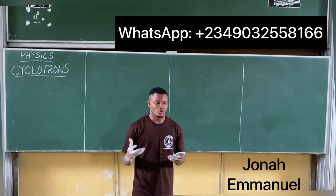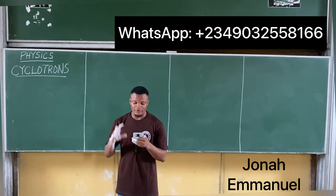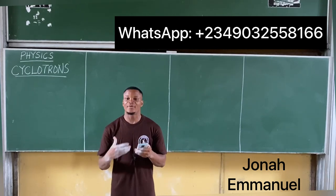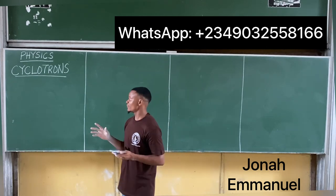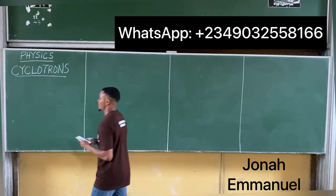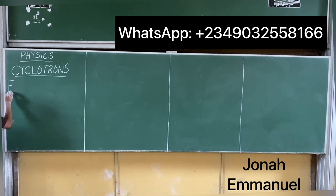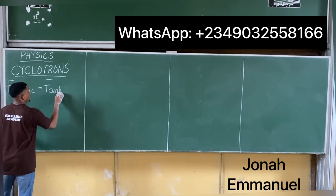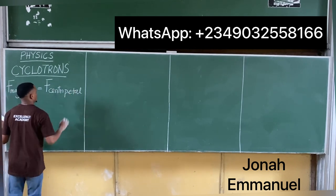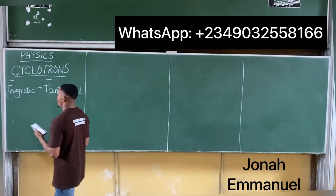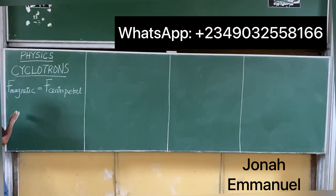Here's what to note for a cyclotron: the magnetic force needed for the circular path is provided by the centripetal force. So for a cyclotron, magnetic force is equal to centripetal force — F_magnetic = F_centripetal.